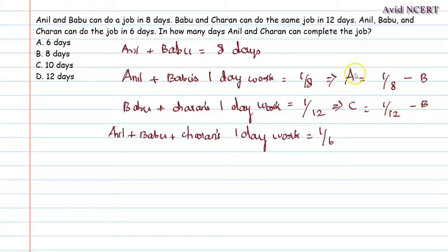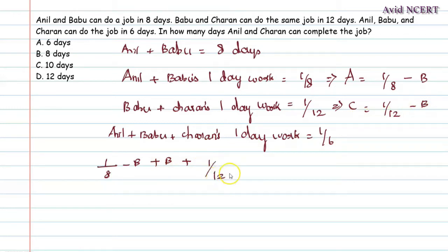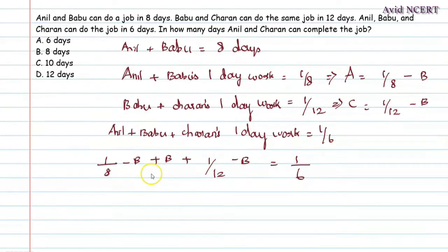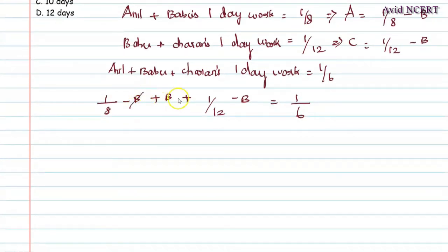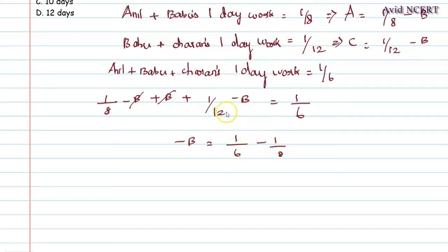Substituting the values of A and C into the third equation: A is 1/8 minus B, plus B, plus C which is 1/12 minus B, equals 1/6. Simplifying, minus B plus B cancels. Therefore, 1/8 minus 1/8 and 1/12 moves to the other side as minus 1/12.